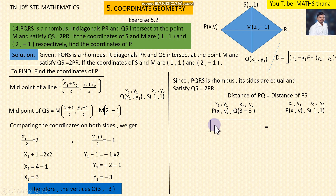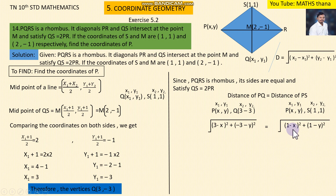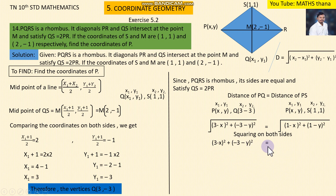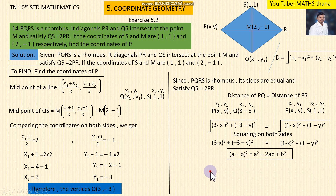Applying the distance formula: (x - 3)² whole square for x2 minus x1, and (y - 3)² for y2 minus y1. Similarly, applying (1 - x)² + (1 - y)². Square root of both sides, root cancels. Using the (a - b) formula to expand.